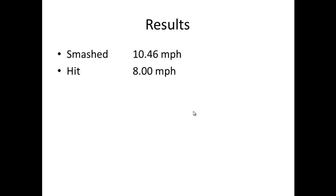First of all, what were the results of the speed estimates? When the verb was smashed, they gave the speed as 10.46 miles per hour. When the verb was hit, it was 8 miles per hour. So again, you can see there is a significant difference in the average speed estimate.